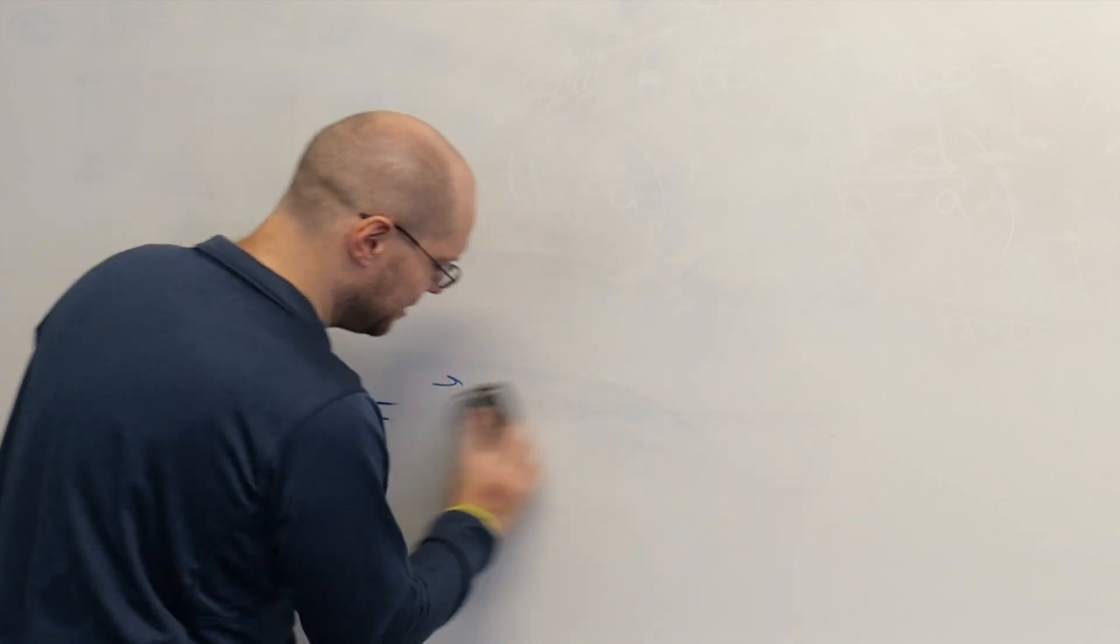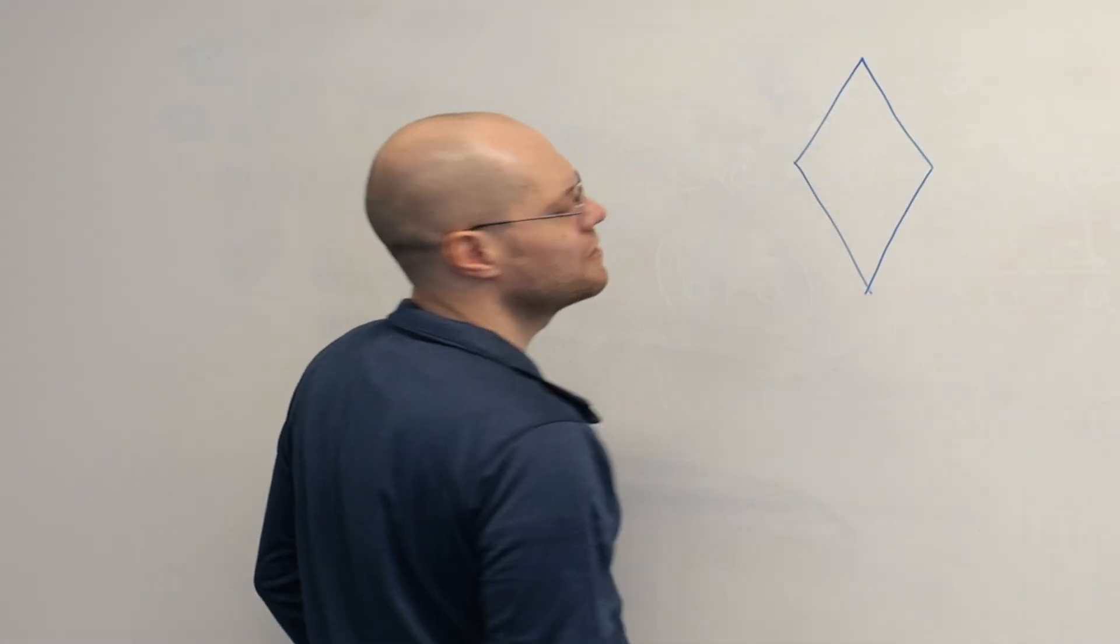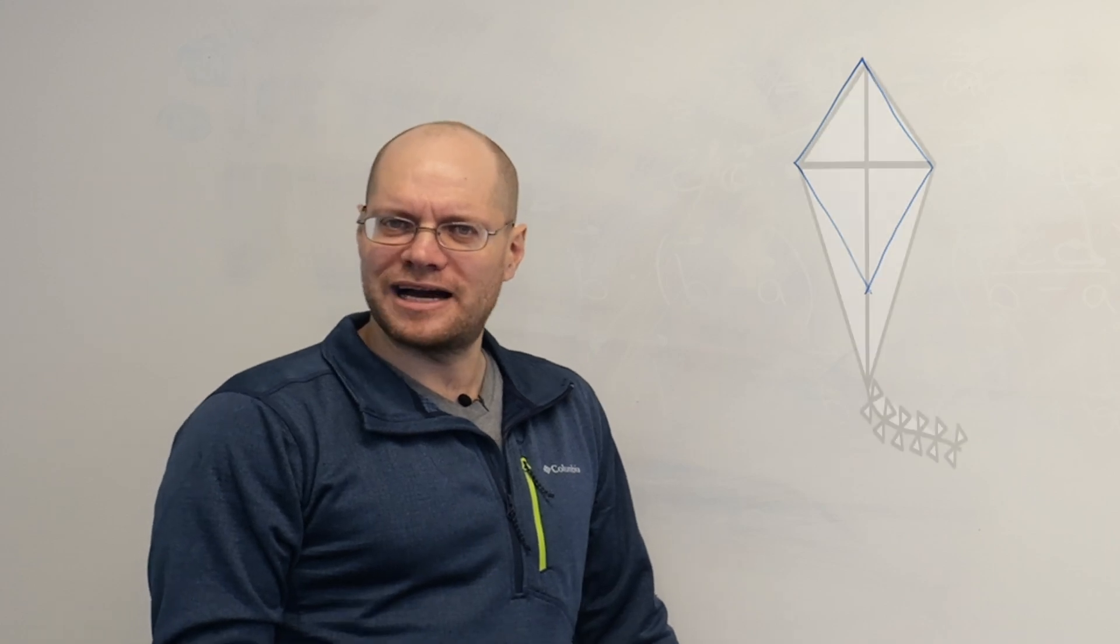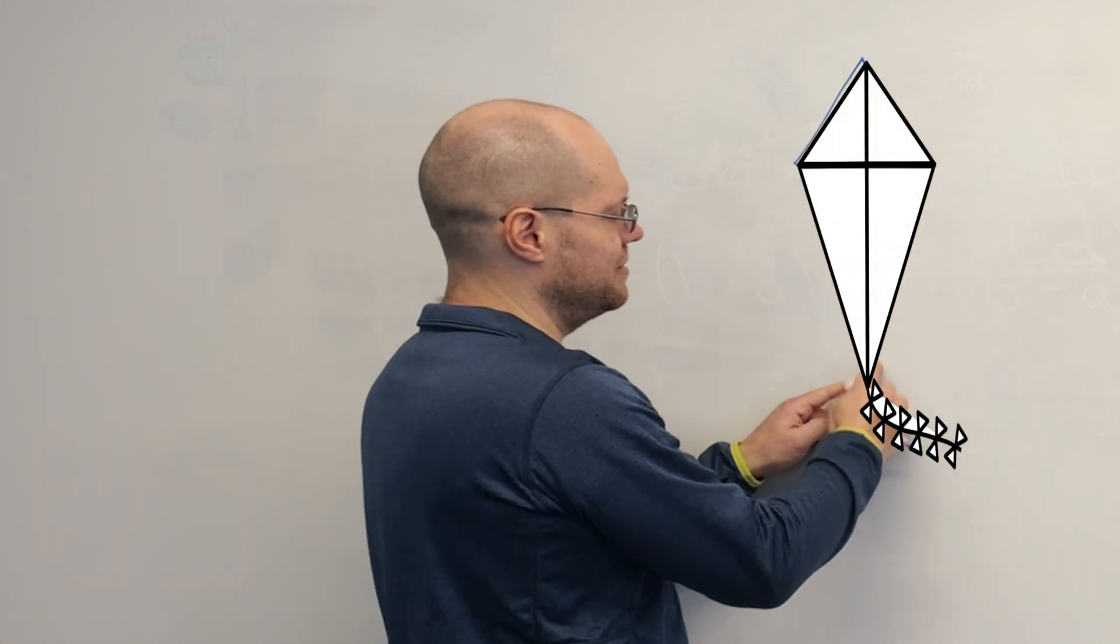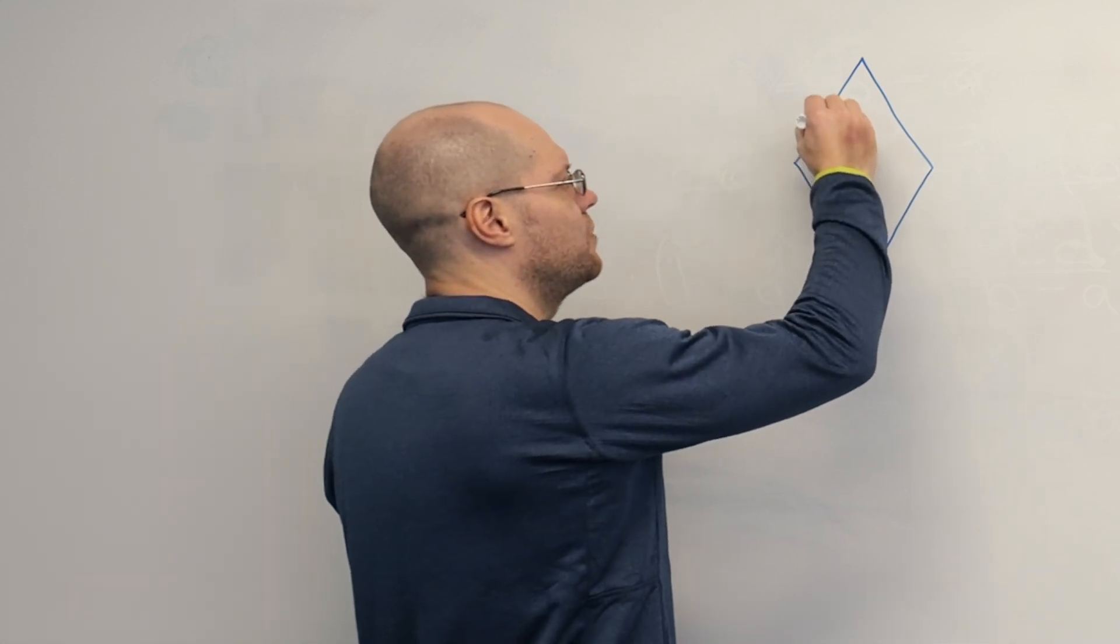Prove that the diagonals of a rhombus are orthogonal. Also known as a diamond, maybe. Different from a kite, where it's not a parallelogram, but this is a rhombus. It's a parallelogram with four equal sides.